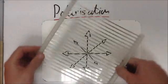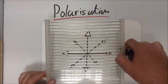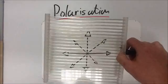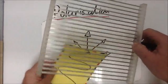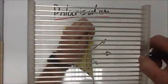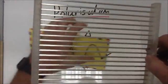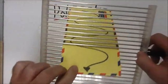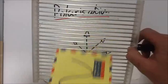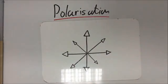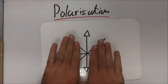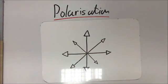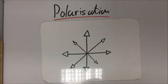But if I turn it, the horizontal bars can now fit through. It's kind of like posting a letter — I can't post a letter that way, but I can post a letter, or a photon, if it's oscillating in that direction. The effect of removing half of the light — half of the oscillations — is that it reduces the intensity of light.